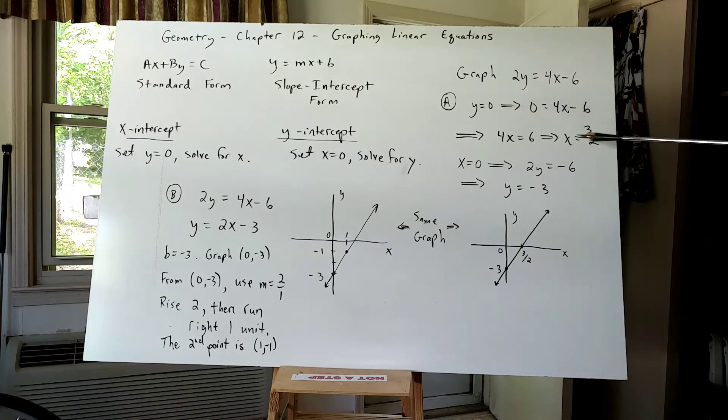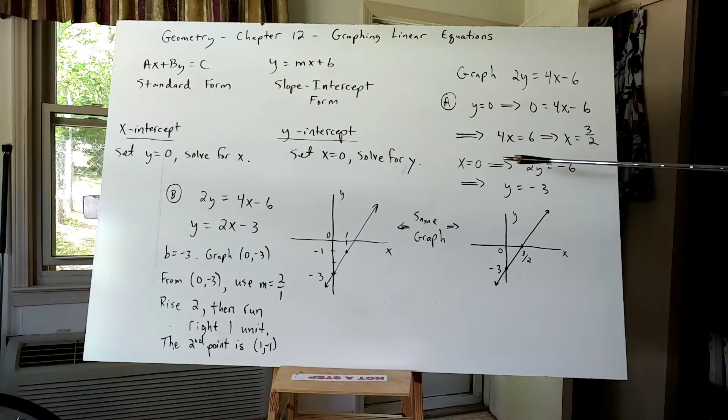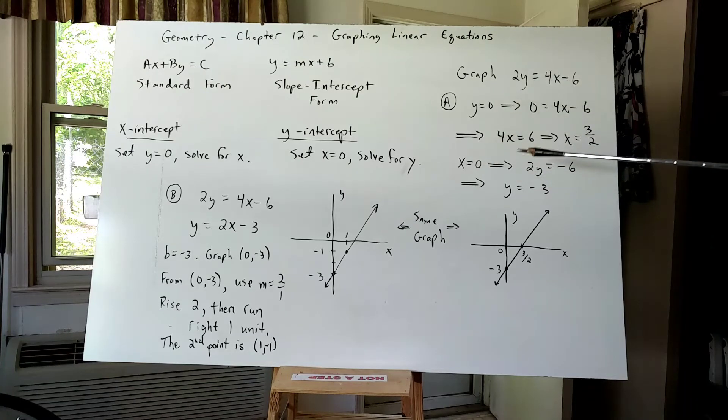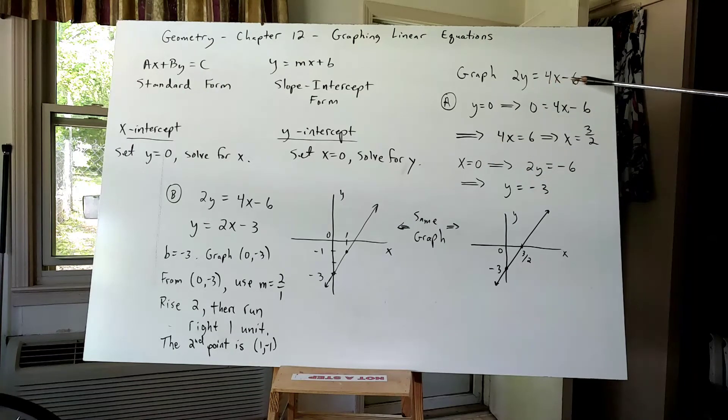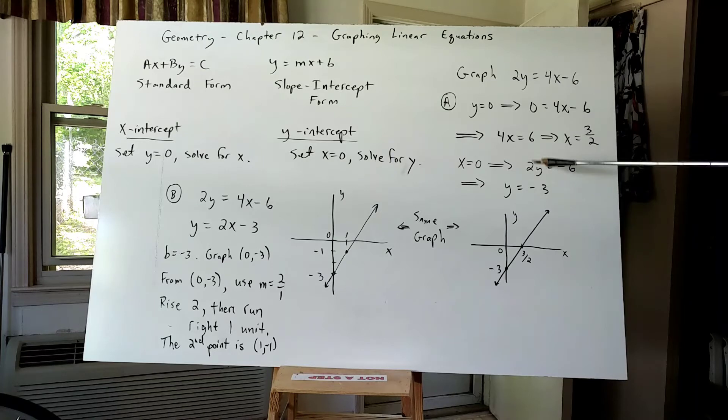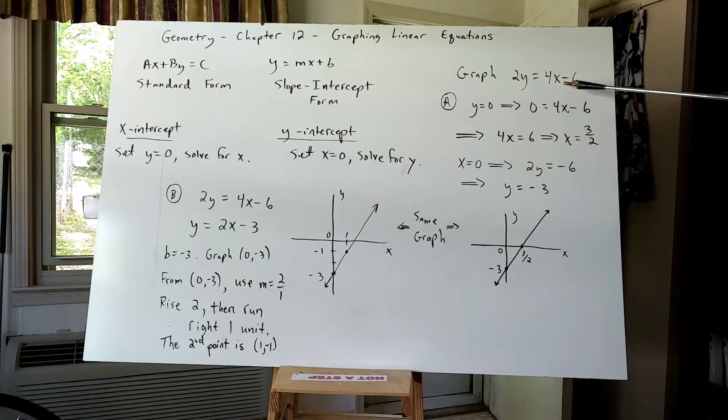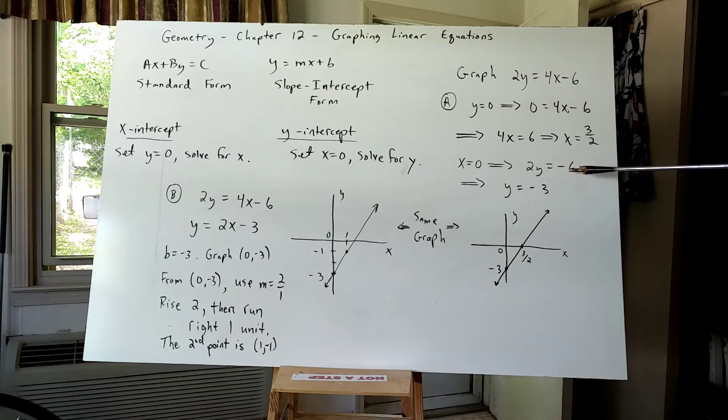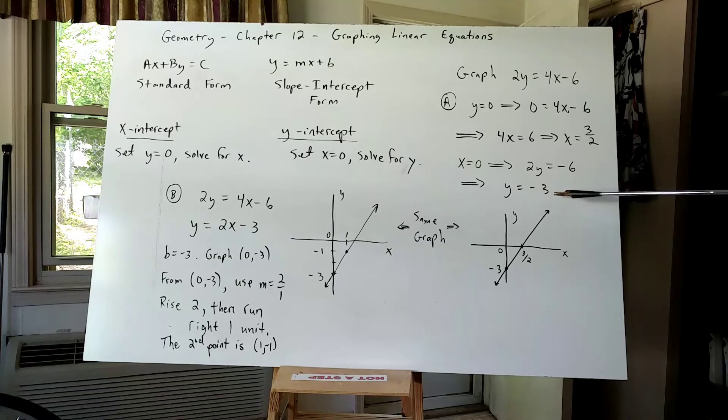After setting Y equal to zero and solving for X, I will then set X equal to zero in order to solve for Y. Setting X equal to zero in this equation, the two Y remains two Y, but four times zero is zero and zero minus six gives me negative six. So that lends itself to becoming two Y equals negative six. Dividing both sides by two gives me Y equals negative three.